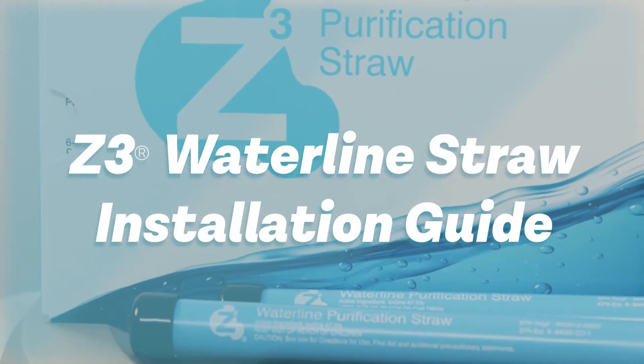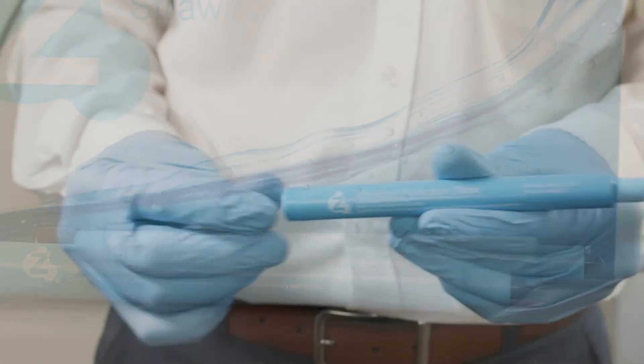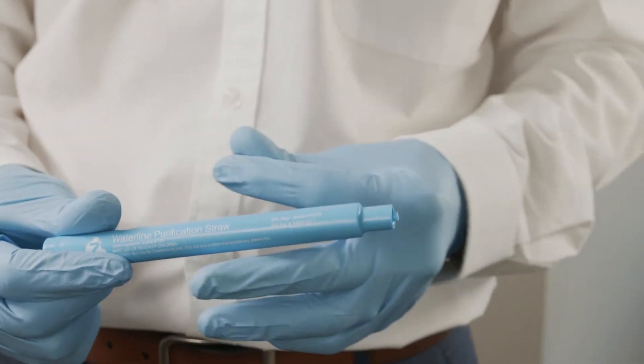The Z3 straw is easy to install and easy to maintain. When you receive your Z3 straw, start by removing the vinyl shipping caps from both ends of the straw.